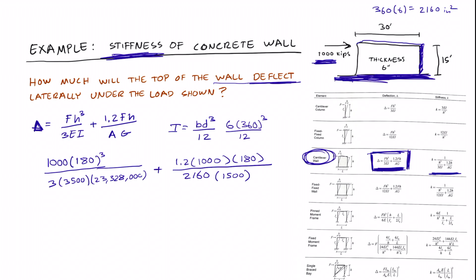If we calculate the first part, we get 0.0238 inches plus 0.066 inches, which equals 0.09 inches. So if we apply a force of 1,000 kips to this concrete wall, this 6-inch concrete wall, it will deflect this much.